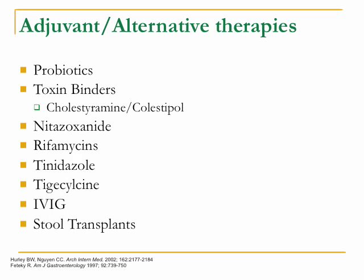Adjuvant and alternative therapies include probiotics, toxin binders such as cholestyramine or cholestipol, nitazoxanide, rifamycins like rifampin or rifaximin, tinidazole, tigecycline, IVIG, and even stool transplants. These agents weren't heavily discussed in the new guidelines, but I'll touch on some of them.